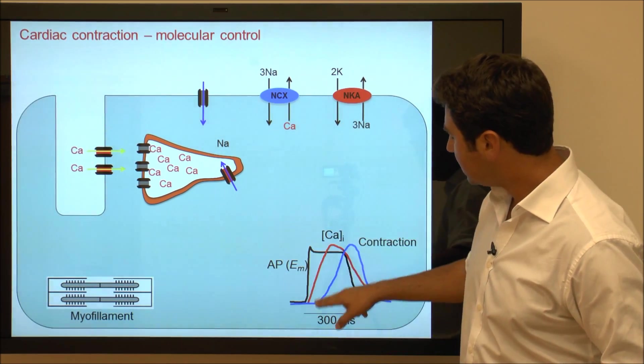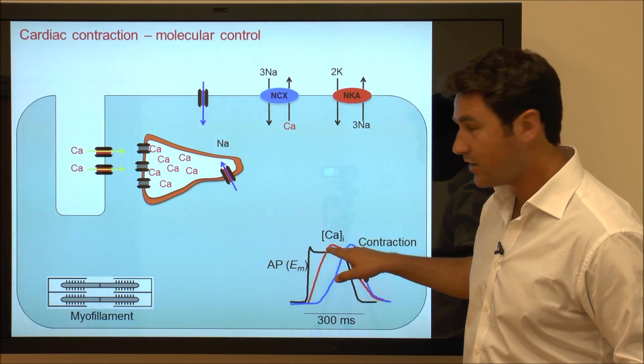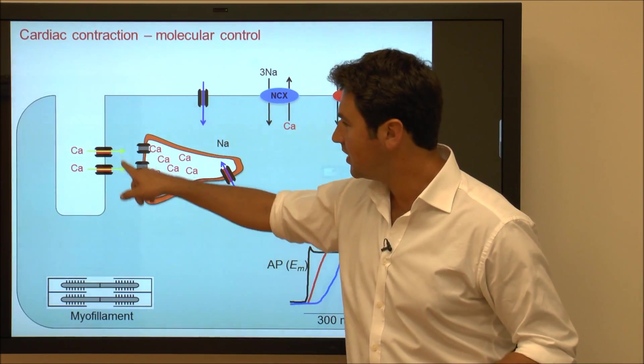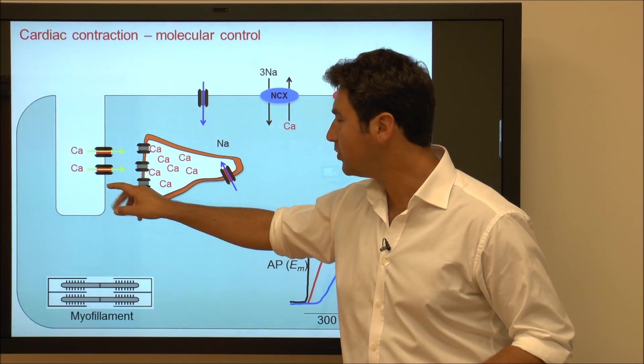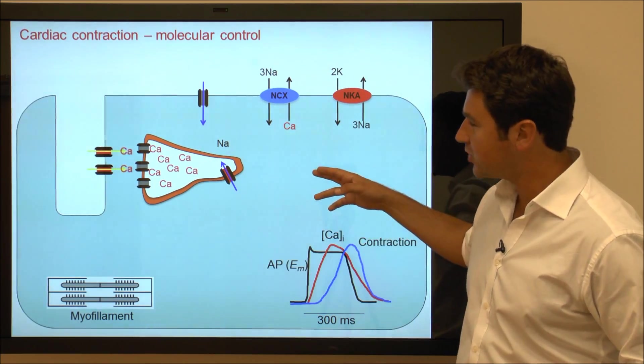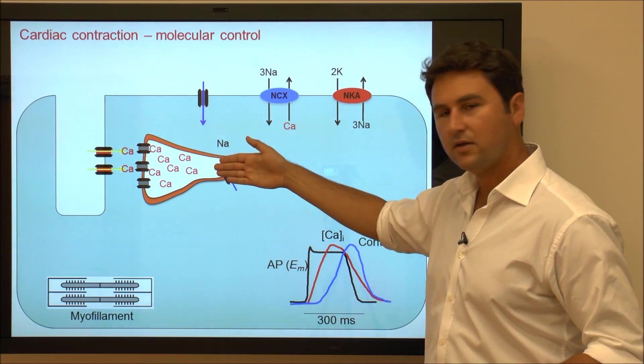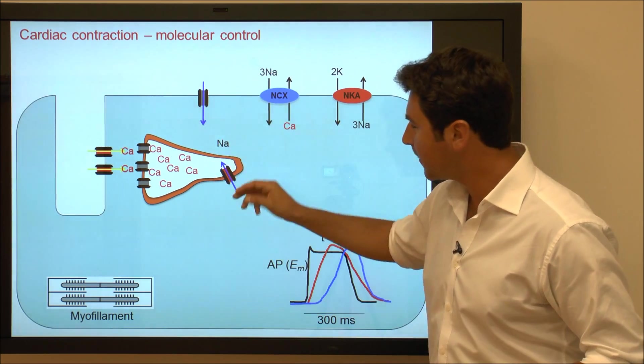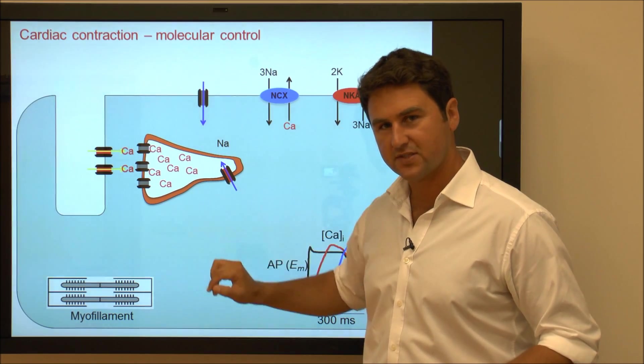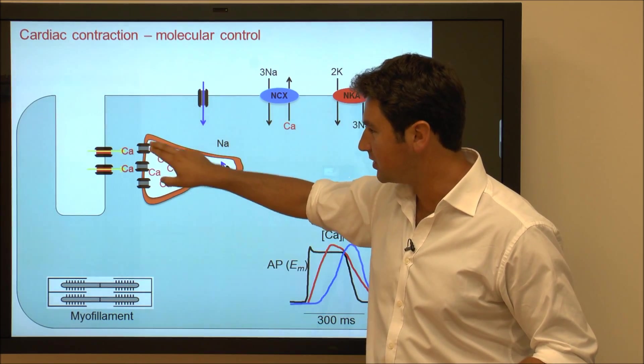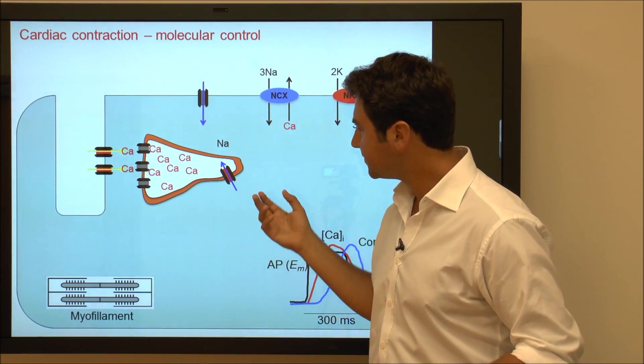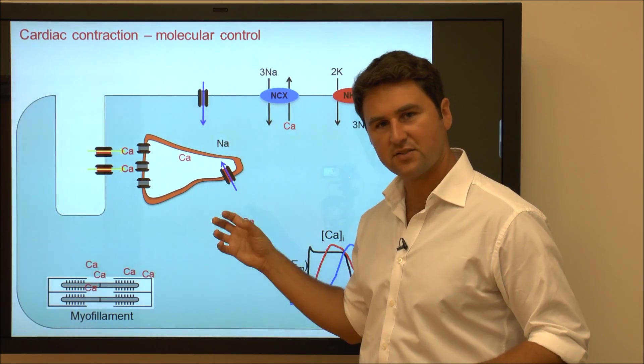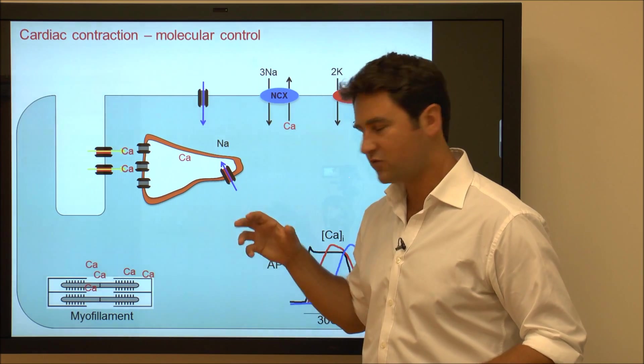This huge increase in membrane potential will cause L-type calcium voltage-gated channels to open up. Calcium will now rush in from the outside to the inside of the cell in the vicinity of the ryanodine receptors. Ryanodine receptors will sense this calcium elevation and will open up because they are calcium-gated calcium channels.